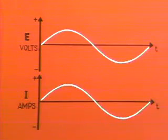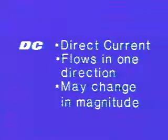We can now summarize the differences between DC and AC voltages and currents. DC is direct current, a current which flows in only one direction. It could change in magnitude, and if it does, it is generally called pulsating DC.